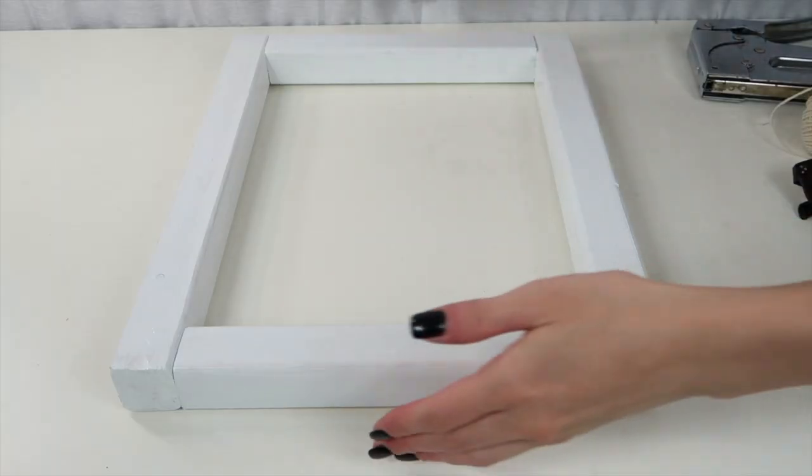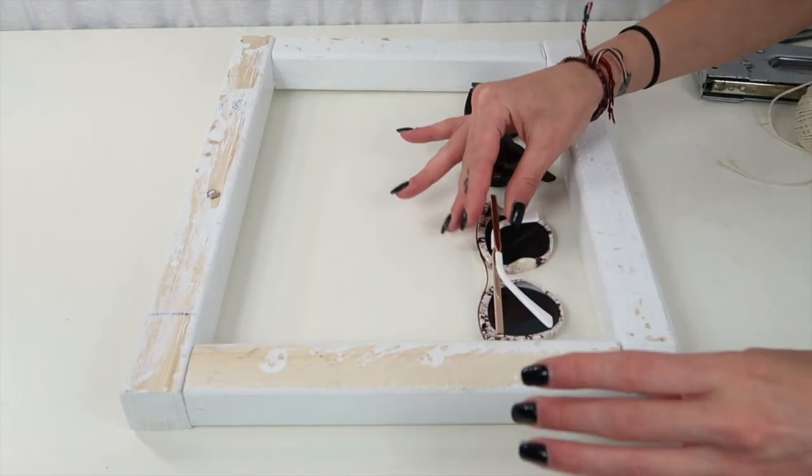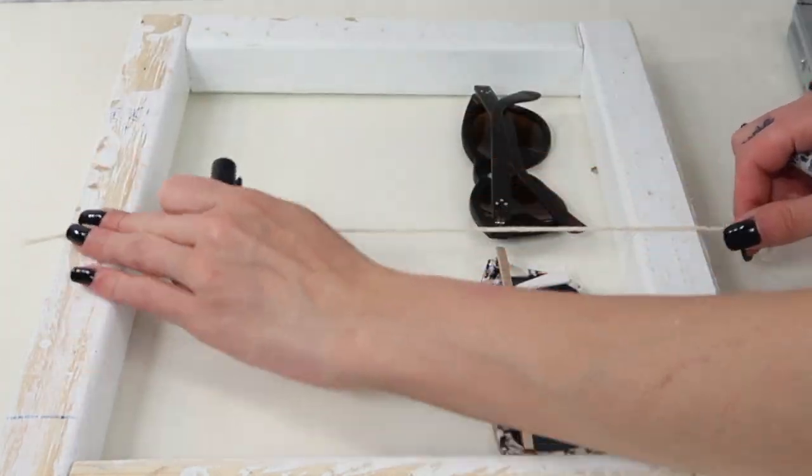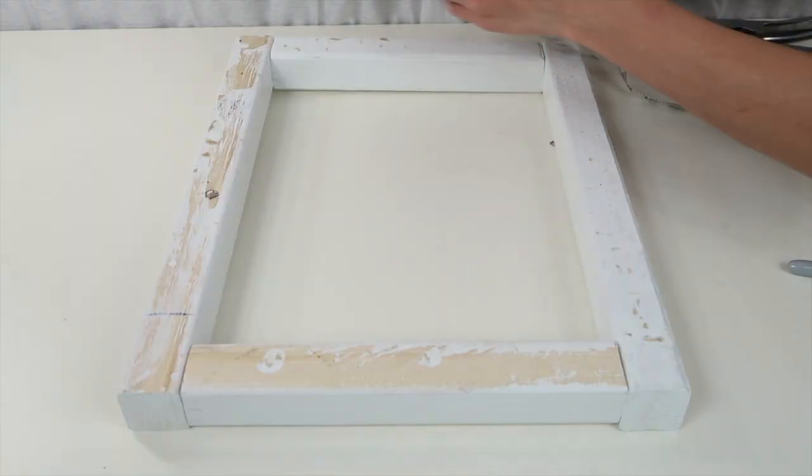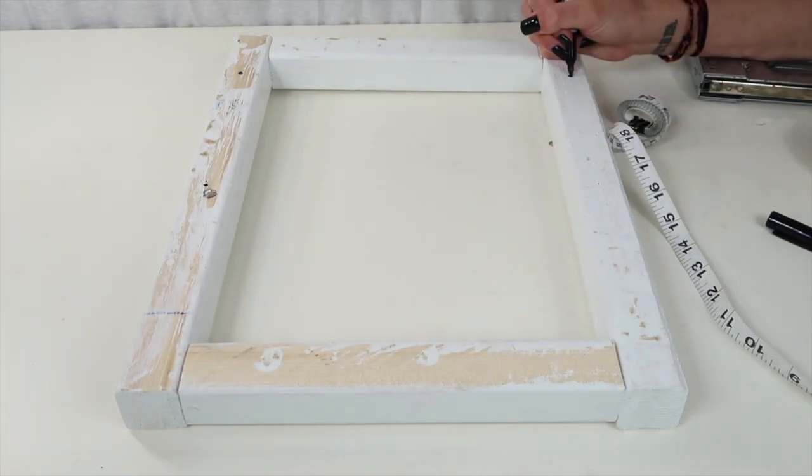Once you're finished that we're going to flip it over and see where we want our sunglasses to hang. And then I'm going to make markings on where I want the string and then I'm going to measure the markings to make sure that they are all lined up evenly and that my string will be straight.